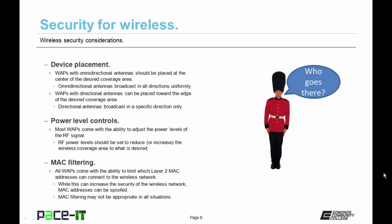Wireless access points with omni-directional antennas should be placed in the center of the desired coverage area, since omni-directional antennas broadcast in all directions uniformly. If placed on the edge of the desired coverage area, the wireless signal will extend where it shouldn't belong. Wireless access points with directional antennas can be placed toward the edge of the desired coverage area since directional antennas broadcast in a specific direction only. Then there are power level controls.